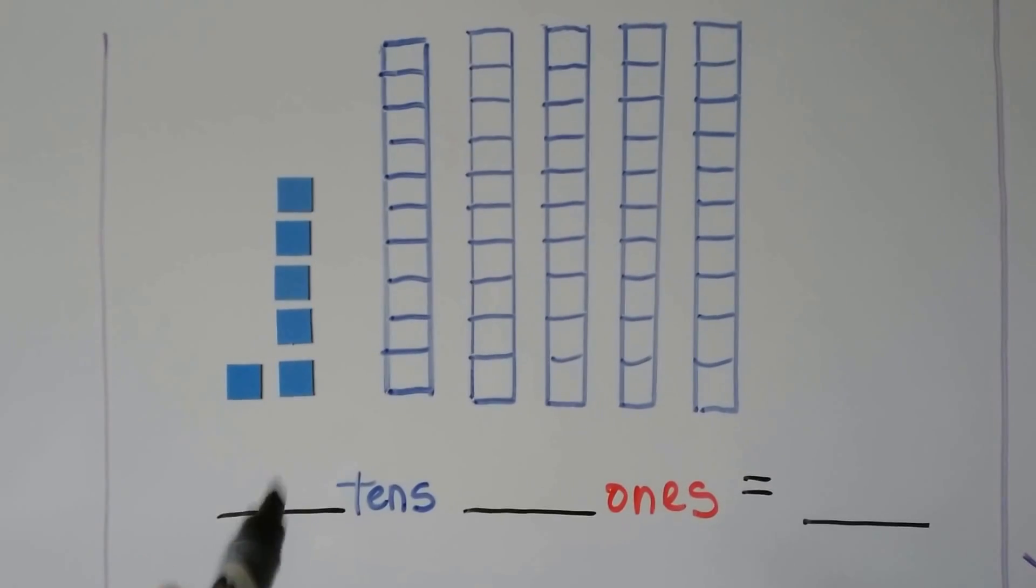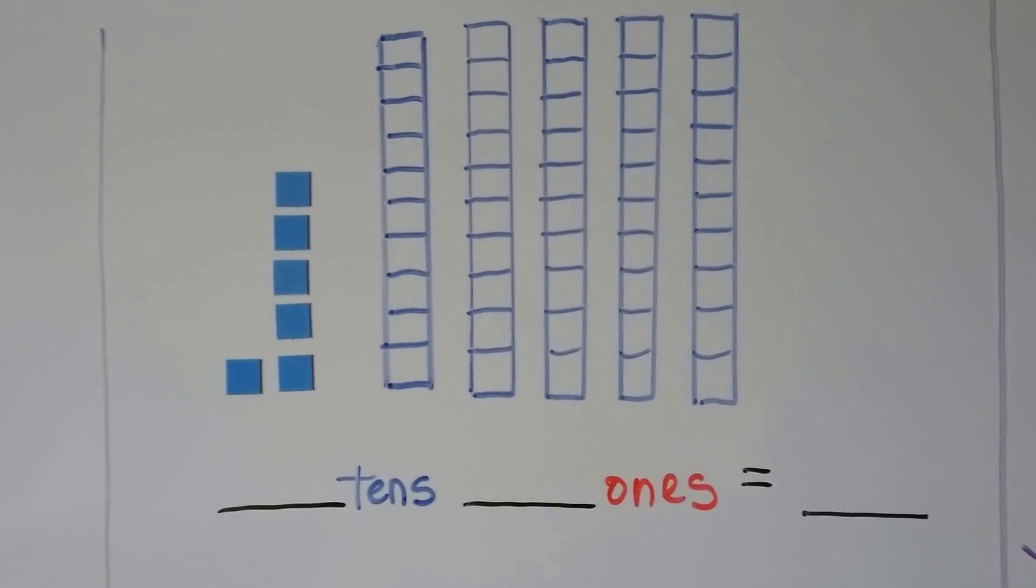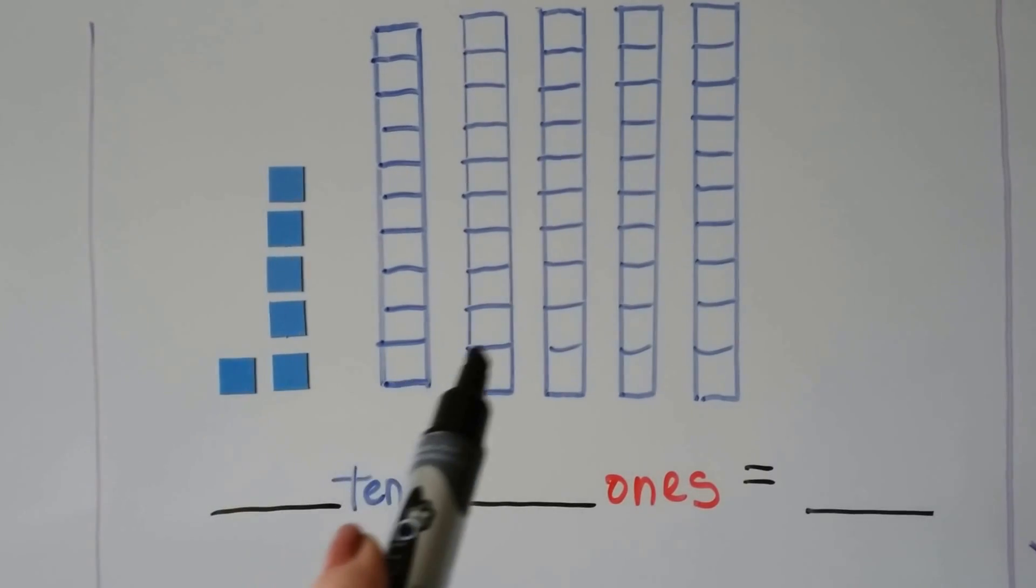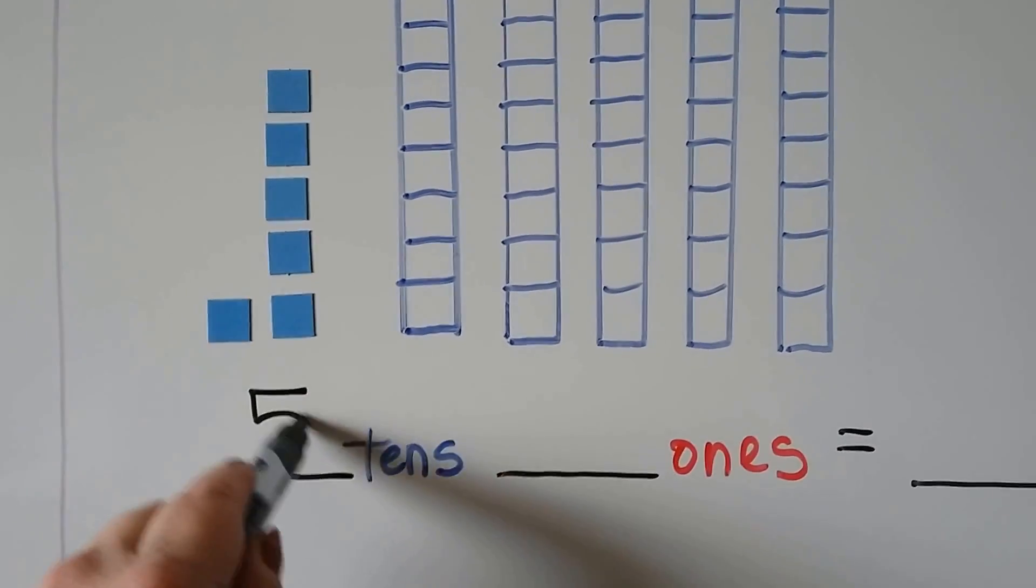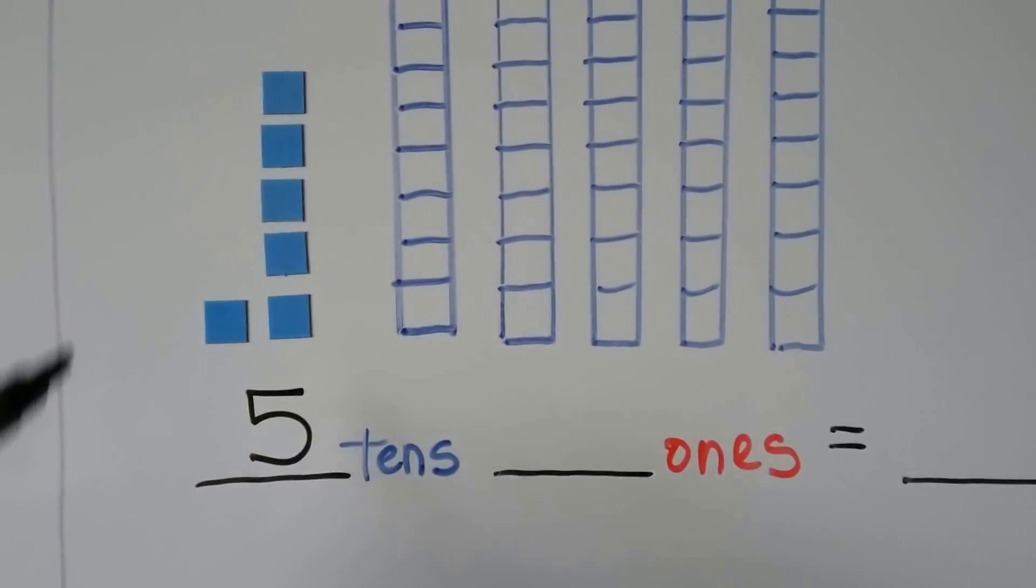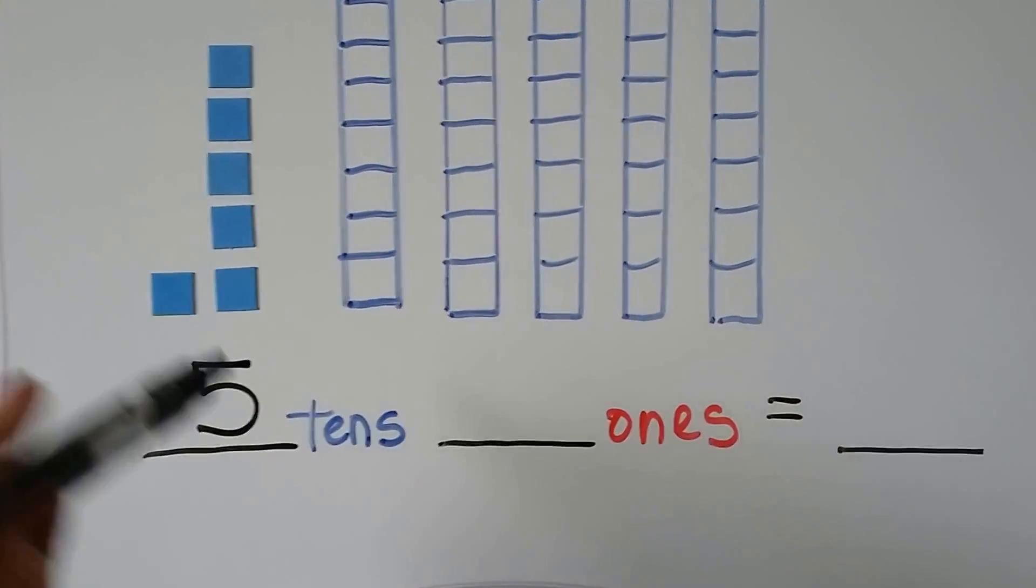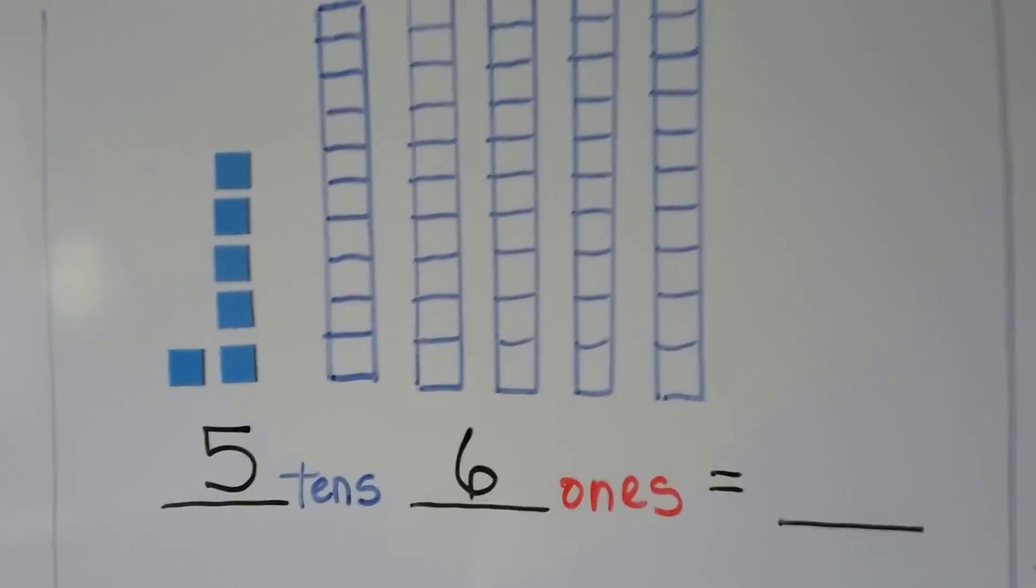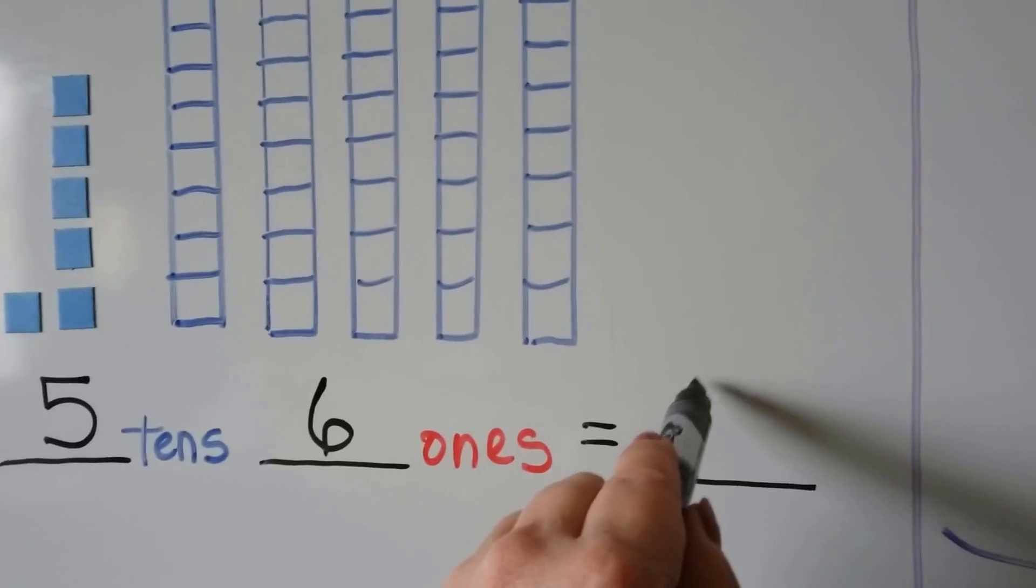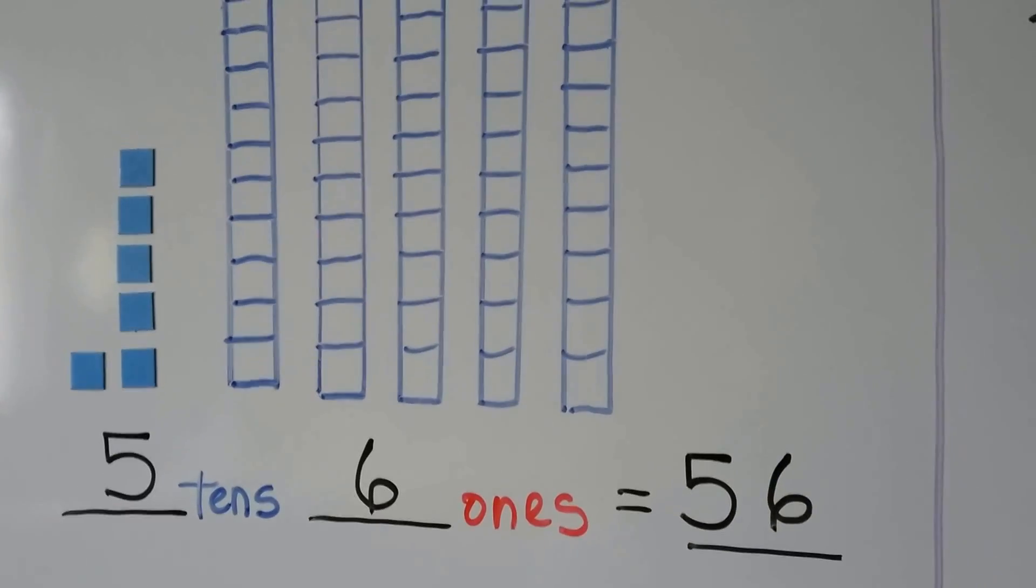Now we still write the tens here and the ones here. How many tens do we have? One, 2, 3, 4, 5 tens. How many ones do we have? One, 2, 3, 4, 5, 6. The number we have, we put a 5 in the tens place and a 6 in the ones place. We have 56.